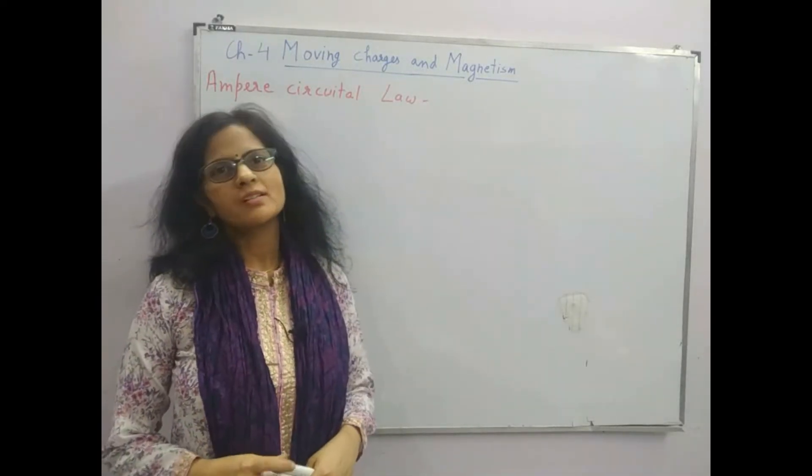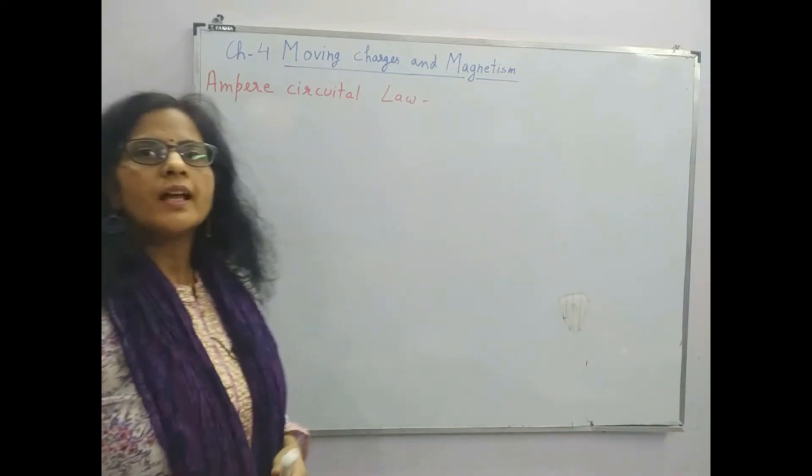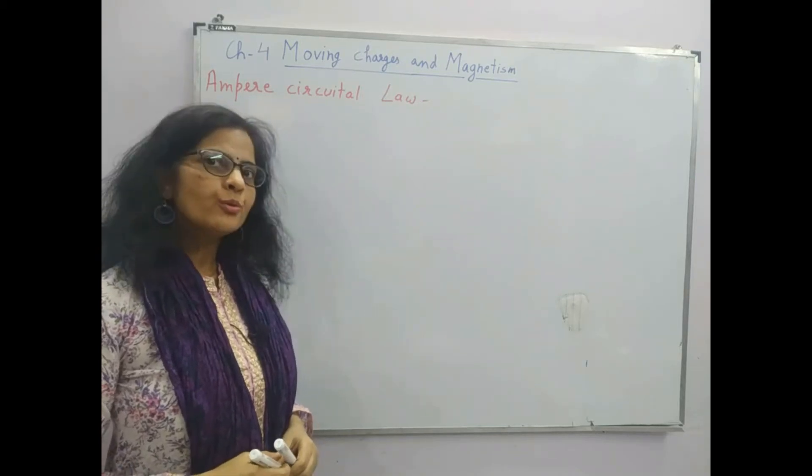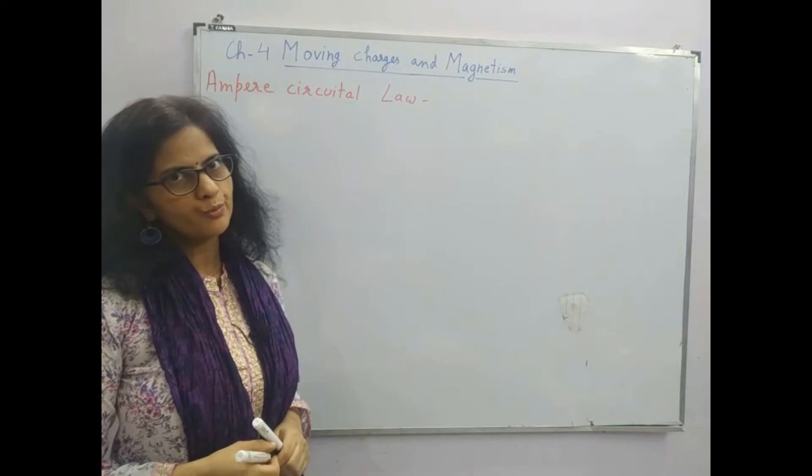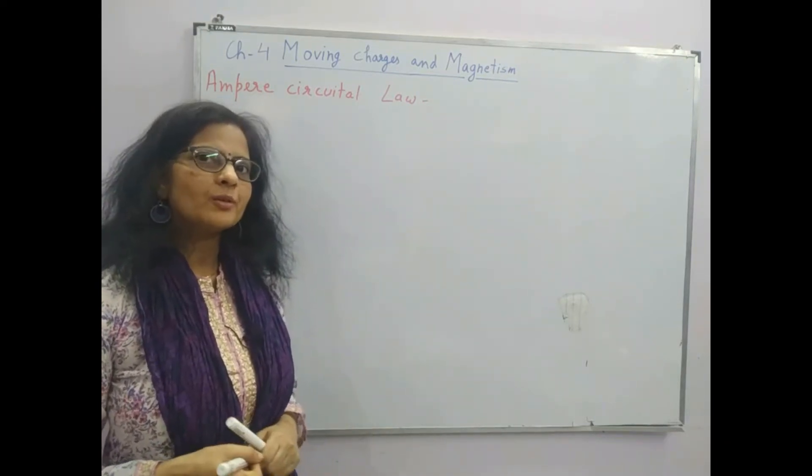Hello everyone, today we will discuss about the Ampere Circuital Law. It states that the line integral of magnetic field across a closed loop is equal to mu naught times the current enclosed by the closed loop, and this closed loop which is imaginary is called as Amperean Loop.